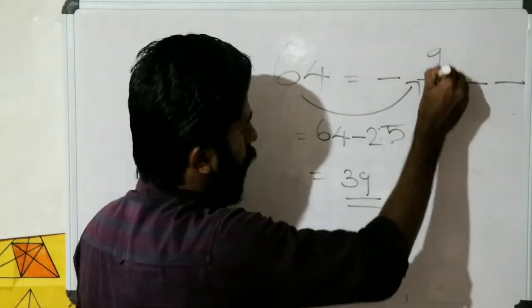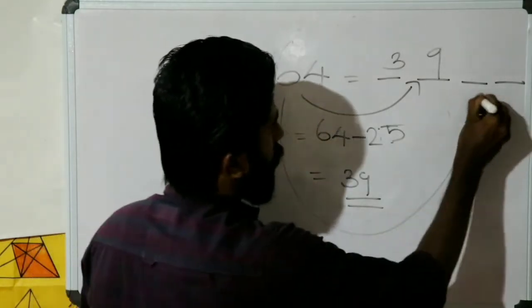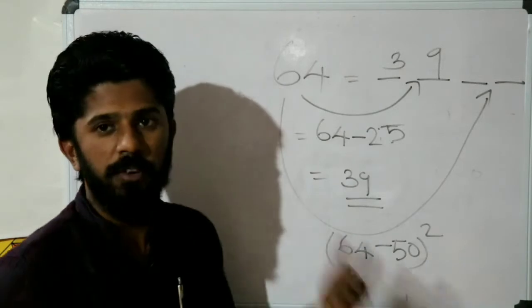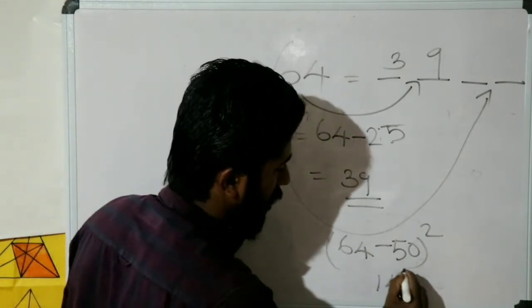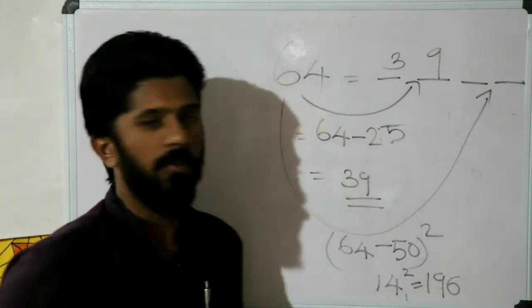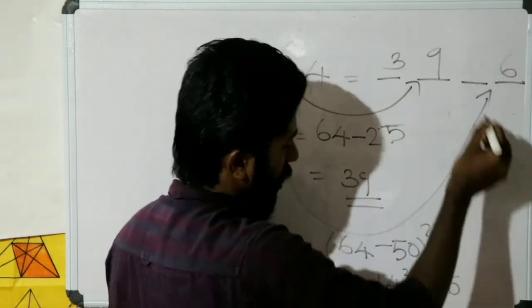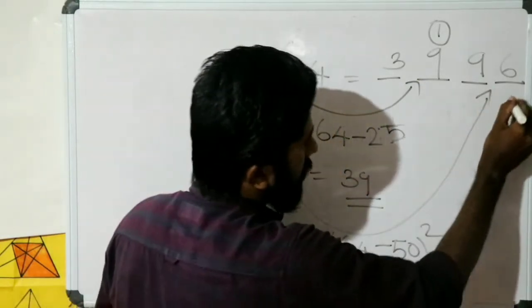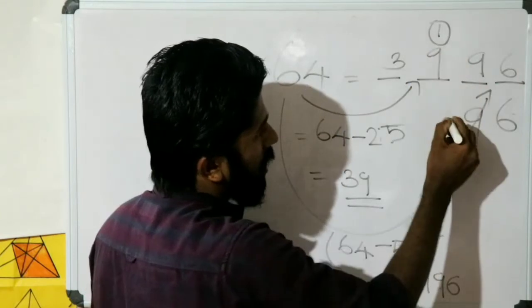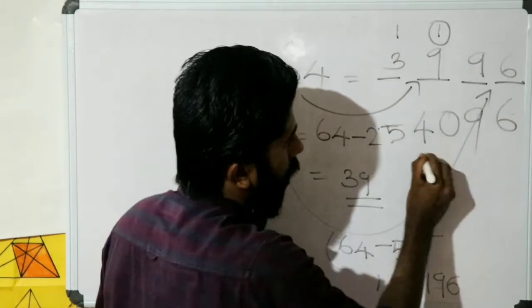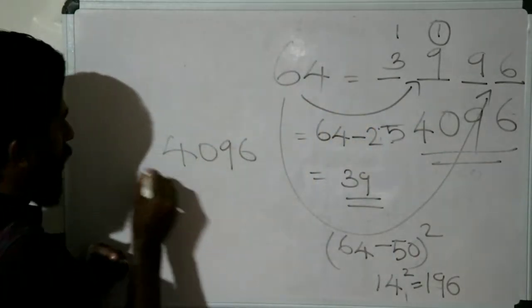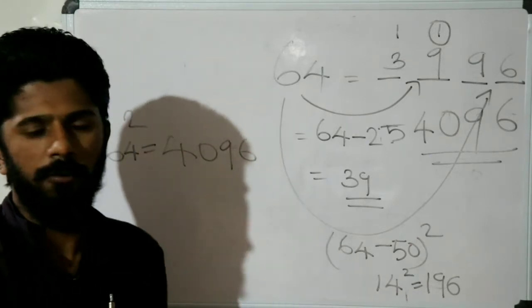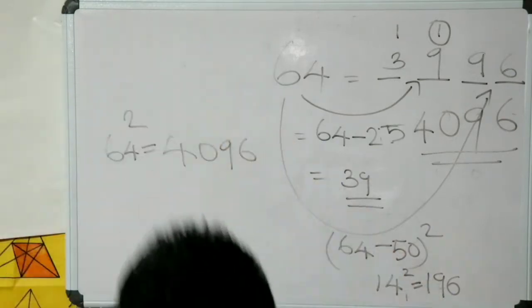Now, for 64 whole square — square of 19... we add this. The result for 64 whole square is easy using the trick form. It's a simple example.